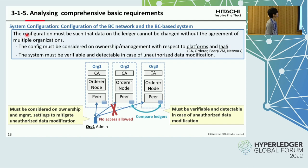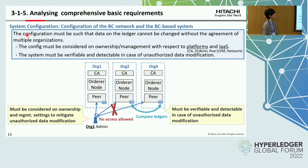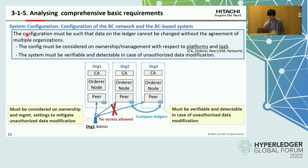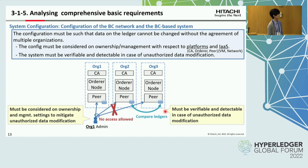The last perspective is system configuration — that is, the configuration of the blockchain network and blockchain-based system. A requirement for this perspective is that the configuration must be such that data on the ledger cannot be changed without the agreement of multiple organizations. The configuration must be considered in terms of ownership and management settings to mitigate unauthorized data modification. Also, the system must be verifiable and detectable in case of unauthorized data modification, for example by comparing ledgers.